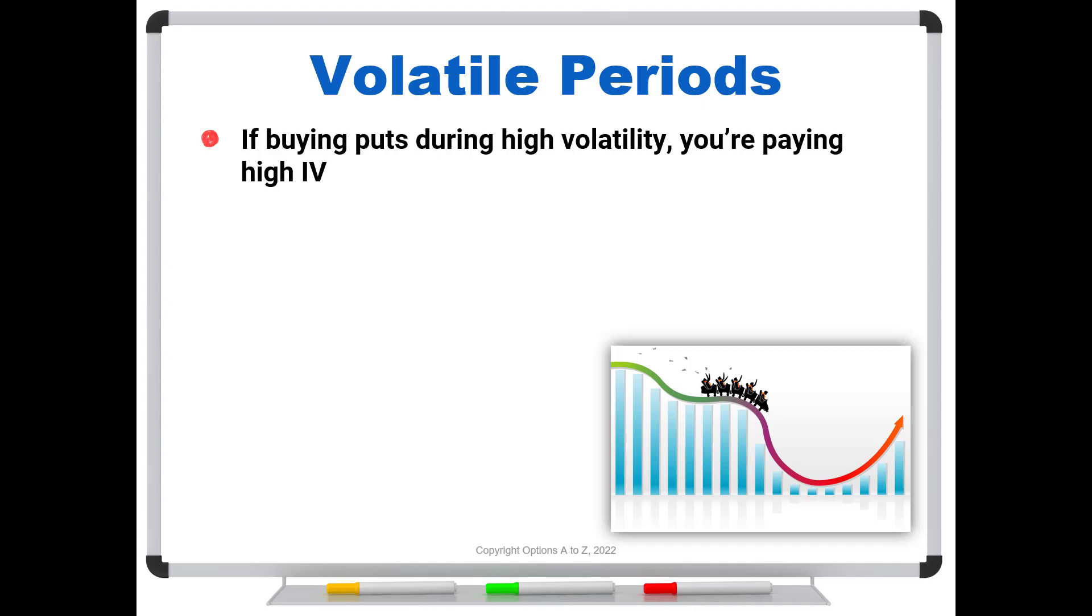So why does that matter? Well, if you're buying high implied volatility, you need fast aggressive moves before you're going to see profits. If the stock slowly moves in your direction, starts heading lower, probably not going to be all that profitable because you're going to have very rapid time decay, again because of this high implied volatility.